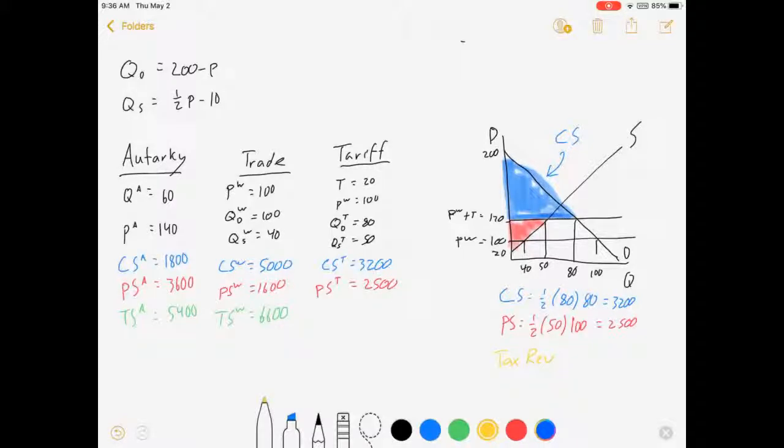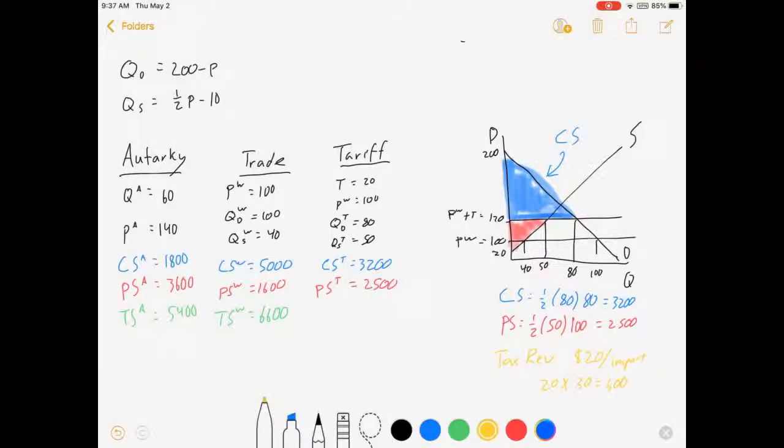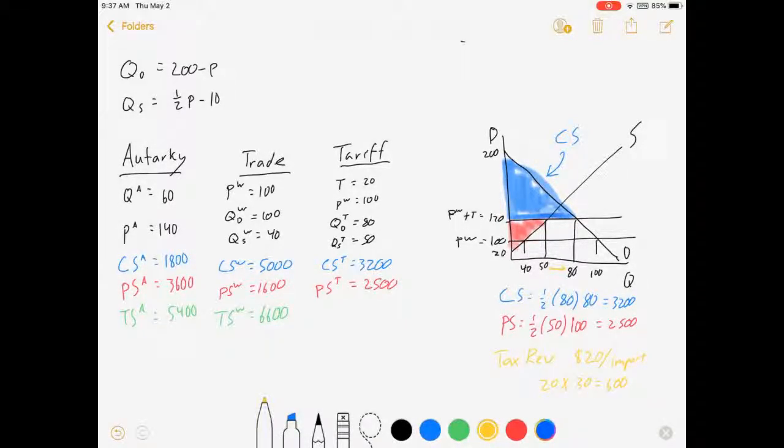So tax revenue is $20 per import. And we imported $30. So $20 times $30 is $600. Uncle Sam brings home $600. Now where do we show that on this market? Well, we're importing between here and here, between $50 and $80. And our tariff is that high, the $20 gap between the world price and the world price plus tariff. And so our shaded area for government is this. That is our tax revenue.